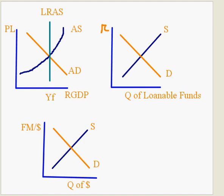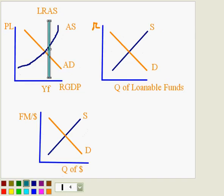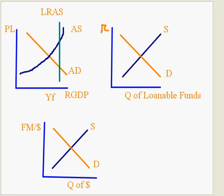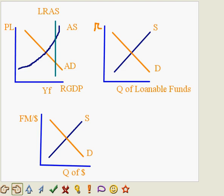So if we are using expansionary fiscal policy, that means that we have a problem in the economy of unemployment. And we can tell that we have unemployment because the equilibrium point of AD&AS is less than long-run aggregate supply,